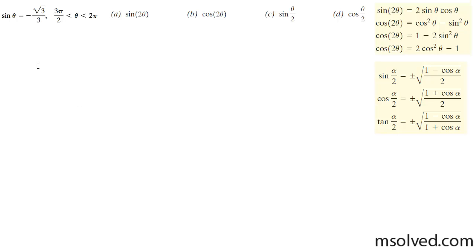Let's come down here. We're going to find the double angle for the sine and cosine, and then the half angle of sine and cosine for this angle. I know the sine theta is equal to negative square root of 3 over 3, and it's in quadrant 4, so I know the cosine is going to be positive in this case.